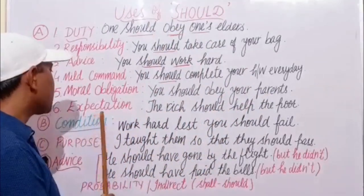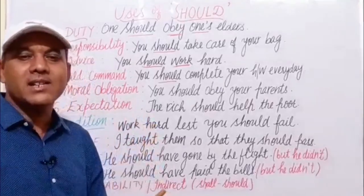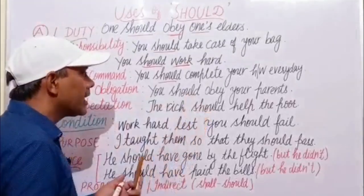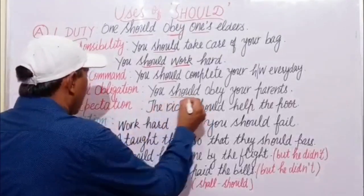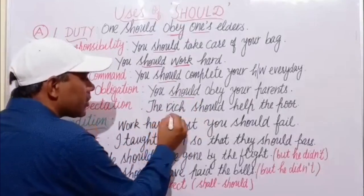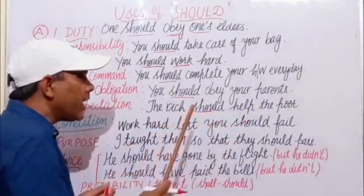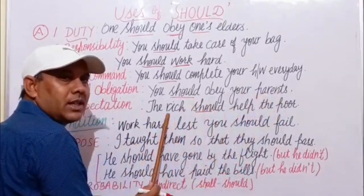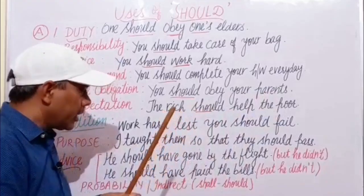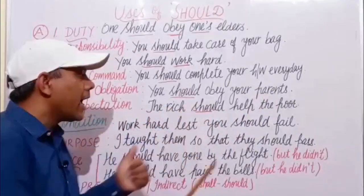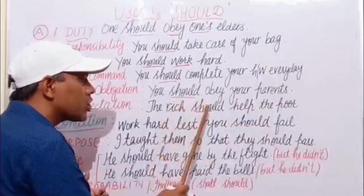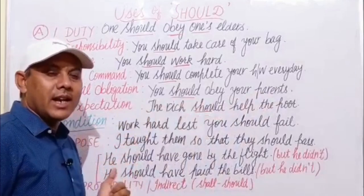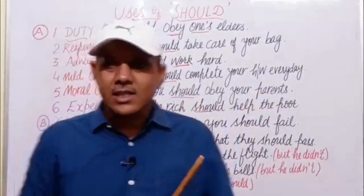Next is expectation. If we expect something from someone, we use should. For example: the rich should help the poor. We expect this help for the poor from the rich — the rich should help the poor. This is our expectation.